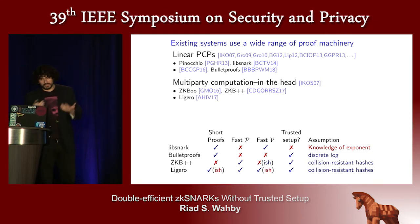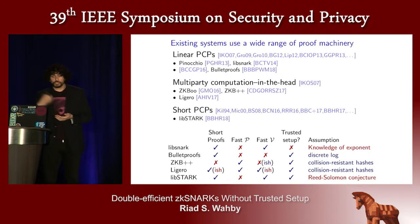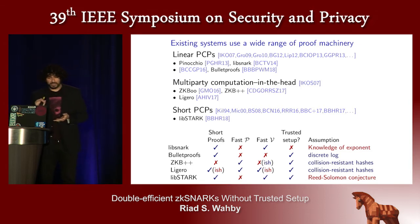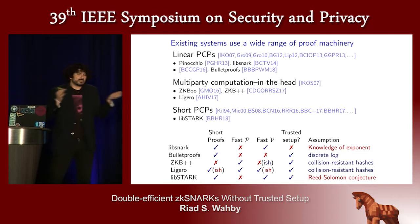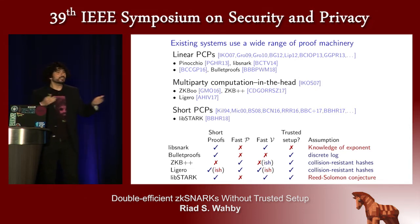More recently, Ligero improves on the MPC-in-the-head approach and gives asymptotically shorter proofs and concretely faster verification. Finally, there's a third class of machinery that builds on short PCPs, and LibStark is currently the only practical implementation of this approach. It gives asymptotically short proofs, fast verification, and needs no trusted setup, but proving is slow, and its performance relies crucially on an unproven conjecture about the hardness of a certain problem related to Reed-Solomon codes. This table is just a rough approximation of the state of play, but the important point is that all these systems give slightly different properties, and none is clearly the best one.